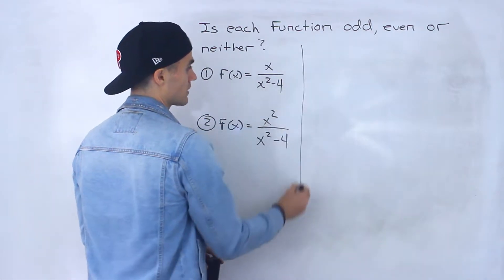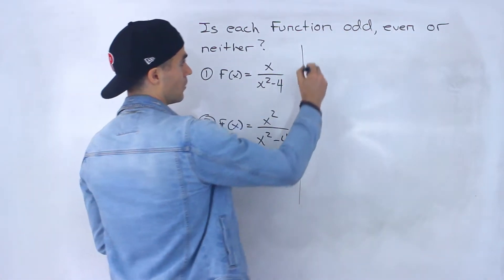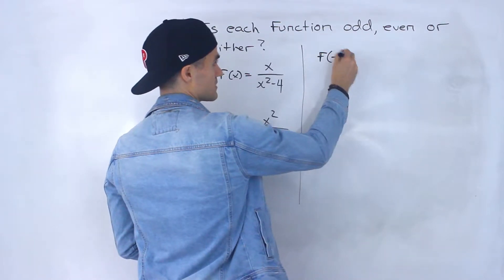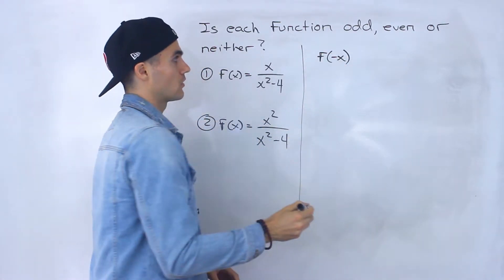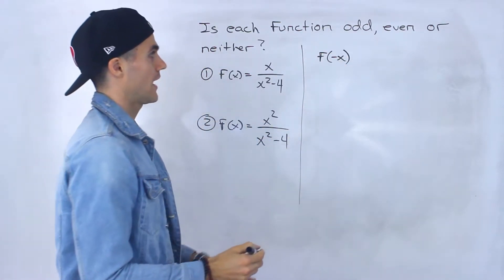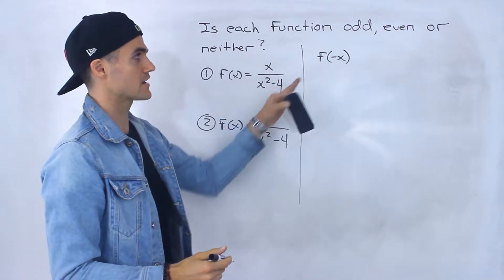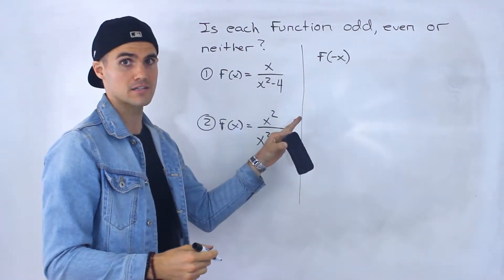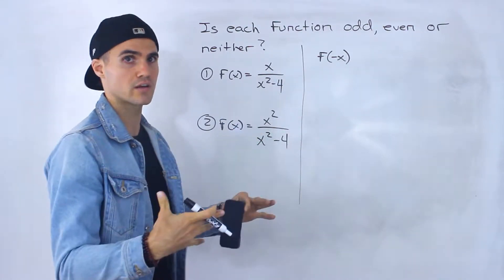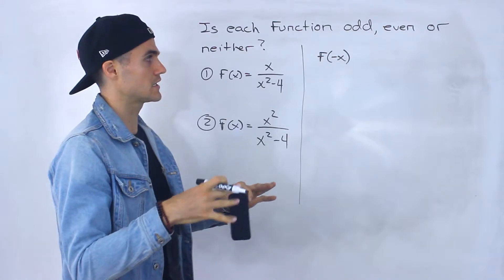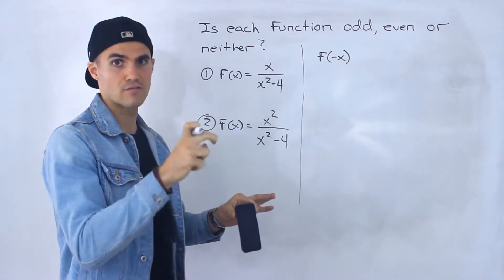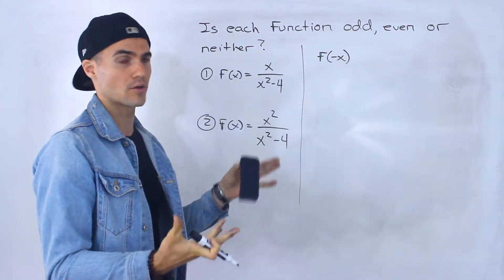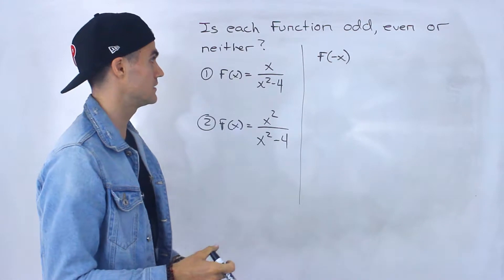What we want to check always is: what is f of negative x going to equal? If f of negative x equals f of x — the original function — we know it's going to be even. If it equals negative f of x, then it's odd. And if it's neither of those, then it's neither.